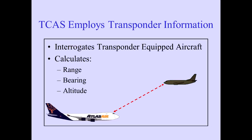TCAS is an independent onboard alerting system. TCAS interrogates transponder-equipped aircraft and calculates range, bearing, and altitude. TCAS-2 provides traffic separation by pitch commands only.